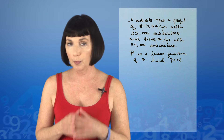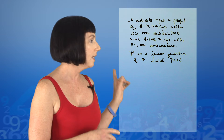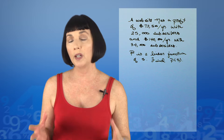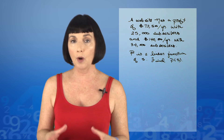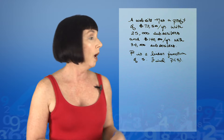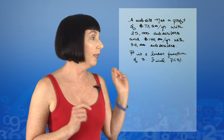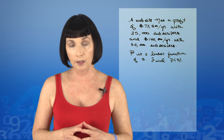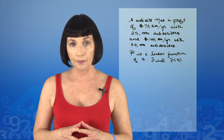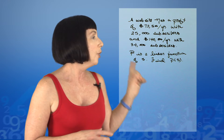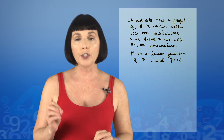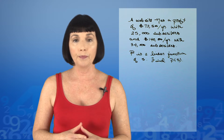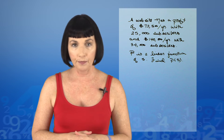A website has a profit of $72,500 per year with 25,000 subscribers, and a profit of $140,000 per year with 34,000 subscribers. The profit is a linear function of the number of subscribers. Find the profit function.